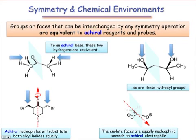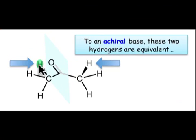A few examples will help to clarify this idea. Let's begin with this molecule of acetone. The two hydrogen atoms are related by this mirror plane, and to an achiral base, they're equivalent. In other words, each of these protons would be removed with equal likelihood if the base is achiral.